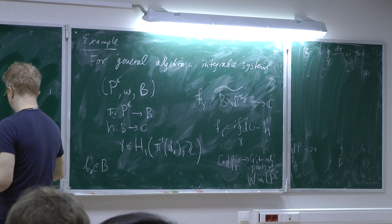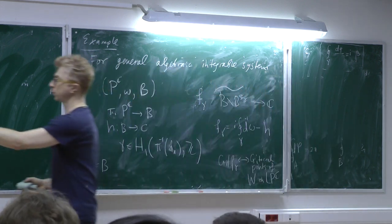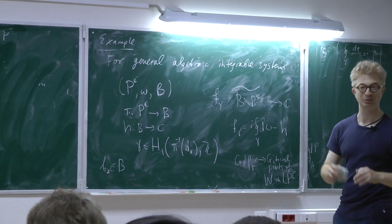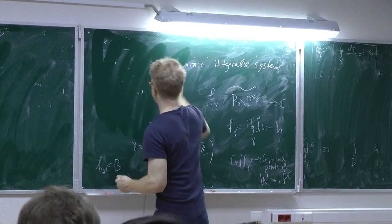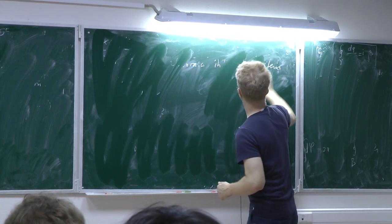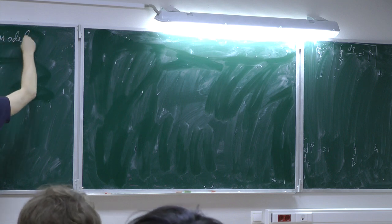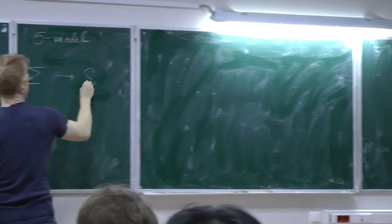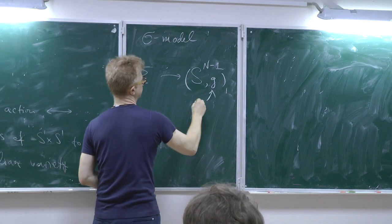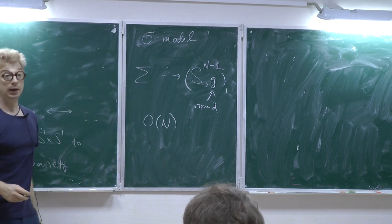Even if the abelian variety in question is infinite-dimensional, a dense set of solutions will fit into some finite-dimensional sub-torus. In the case of quantum field theory, we will be happy if we can find a sufficiently dense — almost all — set of solutions. The problem I want to study is the O(N) model — the sigma model describing maps of a Riemann surface into a sphere with the round metric.